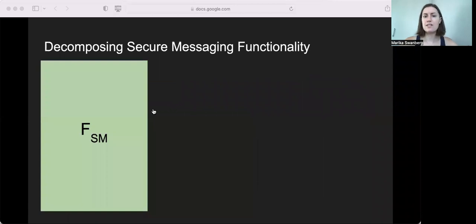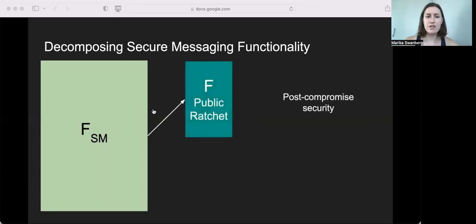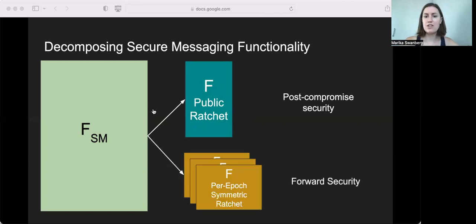All right, so let's decompose this ideal functionality. The signal protocol achieves forward and backward secrecy via a public ratchet and a symmetric ratchet. So the public ratchet functionality persists for the entire communication session, and it guarantees that parties will heal after compromise. And then within each epoch, we have a symmetric ratchet functionality that performs authenticated encryption and decryption of several messages with key evolution between them to provide forward security. And this is the original signal design that we echo in our modular breakdown.